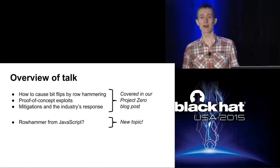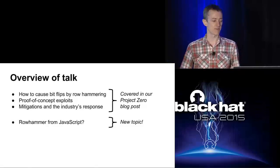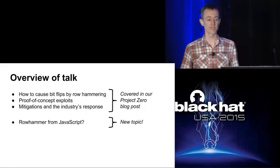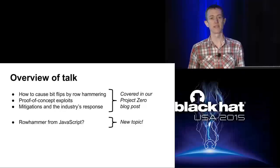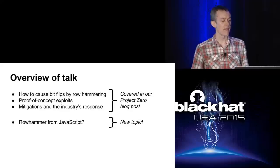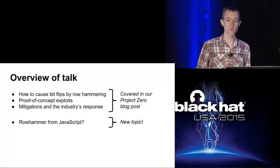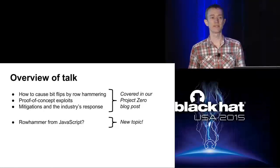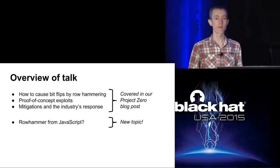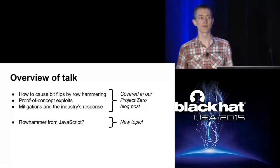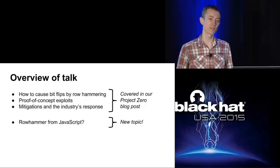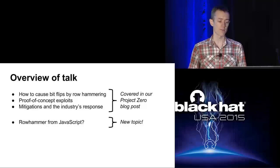I'm going to talk about how software can cause bit flips using the row hammer bug, and the two proof-of-concept privilege escalation exploits I wrote that can use these bit flips to escalate privileges. Then I'll talk about mitigations and how the industry responded. A lot of this was covered in the blog post we published on the Google Project Zero blog earlier this year, but I'll also talk about the possibility of doing row hammering from JavaScript.